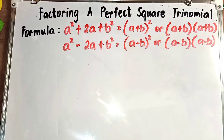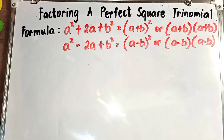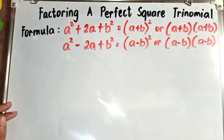There are two formulas for getting the factored form of a perfect square trinomial. The first one is: a² + 2ab + b² = (a + b)² or (a + b)(a + b). The second formula is: a² - 2ab + b² = (a - b)² or (a - b)(a - b).